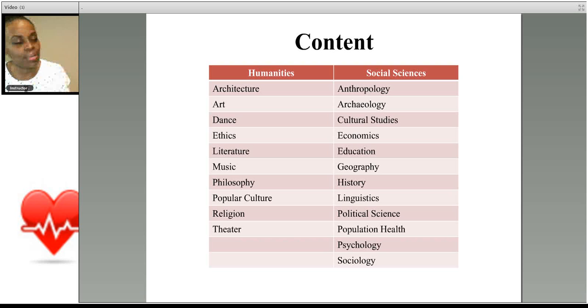Likewise, or similarly, for the social sciences, you have anthropology. So you could be talking about ancient man or evolution of humans, archaeology, cultural studies, economics, education, geography, history, a lot of things. Psychology, sociology, it's fair game. So you can possibly have a passage about anything except the natural sciences.